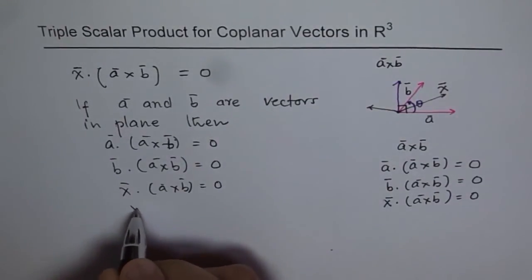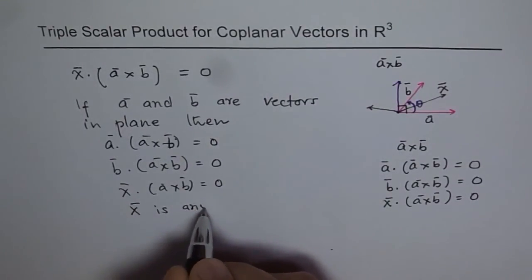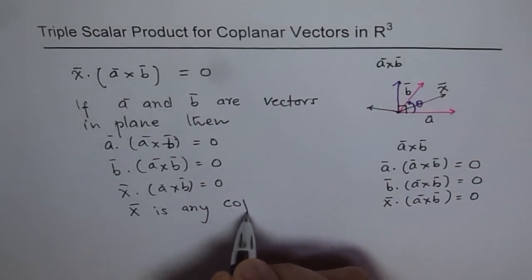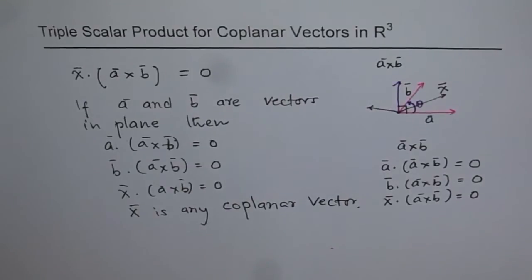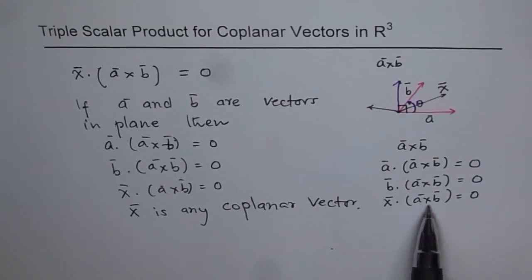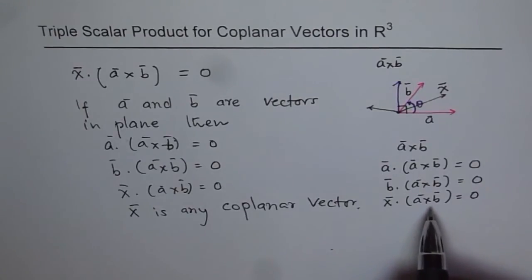Where what is x? x is any coplanar vector. Do you see that? So any vector which is in the plane of A and B, when we do dot product with A cross B, will get zero. So if the dot product of a vector with the cross product of the other two vectors is zero, then the three vectors are coplanar. This is an extremely important property.